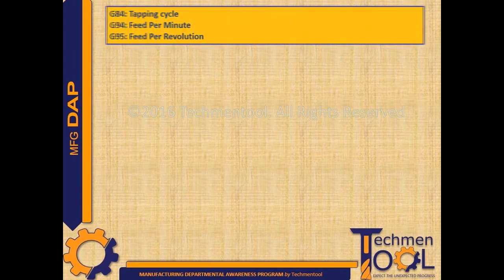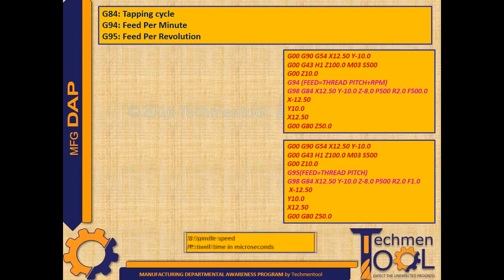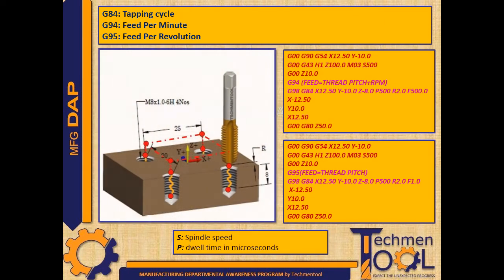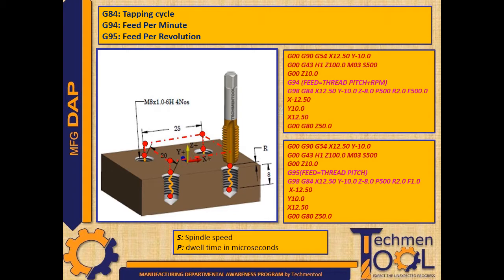G84 code is used for tapping cycle. G94 is used for feed per minute and G95 is used for feed per revolution. In this sample program, after the rapid movements as per instructed positions, the tapping cycle starts along with position X12.5 Y-10 Z-8 with P value 500 microns at the feed rate of 500 microns. Here R is the R plane or reference plane, P is the dwell time in microseconds, and S is the spindle speed. Before the startup cycle, either G94 or G95 code should be mentioned.